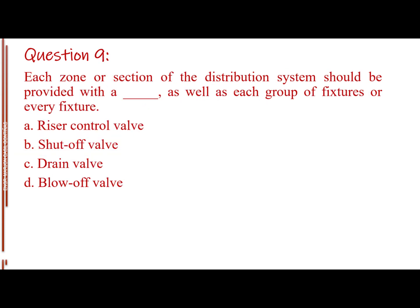Question number 9. Each zone resection of the distribution system should be provided with a blank, as well as each group of fixtures for every fixture. Letter A, riser control valve. Letter B, shut off valve. Letter C, drain valve. Letter D, blow off valve. The answer is letter B, shut off valve.